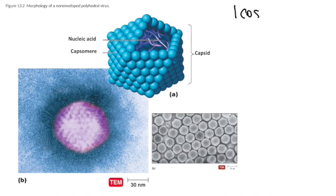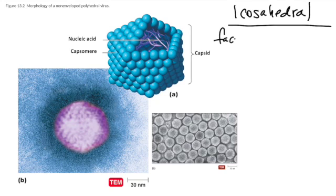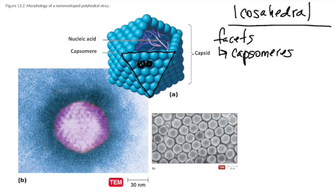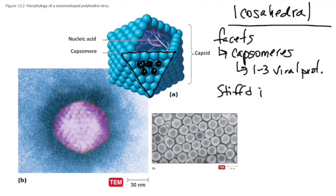Icosahedral capsids are made up of a bunch of different facets, and each of those individual facets is made up of a bunch of capsomeres. The capsomeres are represented by these individual circles that you can see here making up the triangular facet. Those capsomeres are made up themselves of between one to three different viral proteins. Icosahedral capsids are very stiff and inflexible, as you can imagine, because of their three-dimensional multi-planar shape. And here inside the three-dimensional structure is the viral nucleic acid, DNA, RNA, whatever it happens to have.